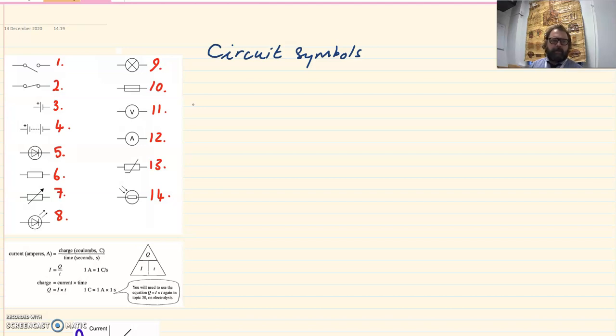So job number one in your revision is to make sure you know these 14 circuit symbols shown here in the diagram. Notice that there are a number of circuit symbols that all have a rectangular shape in the center of them, like this, and these are always resistors.